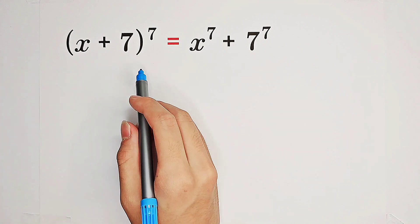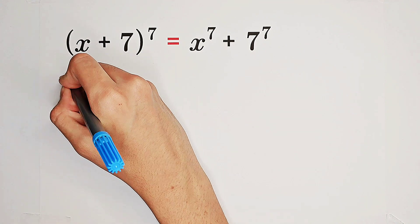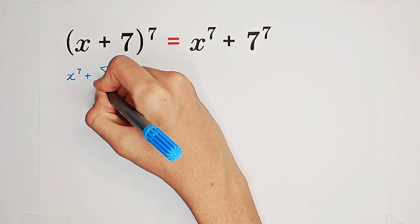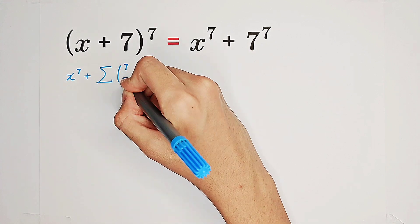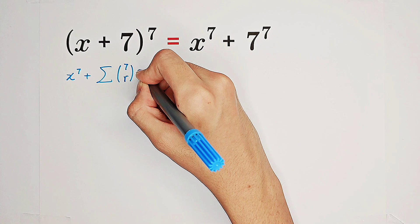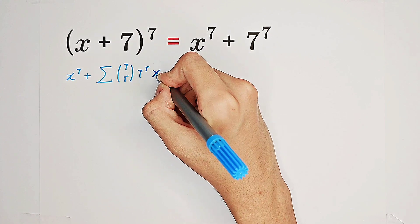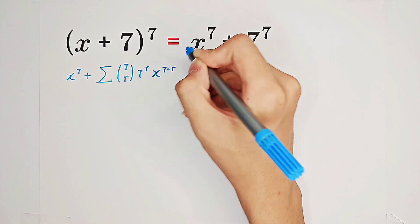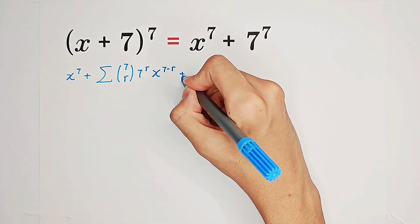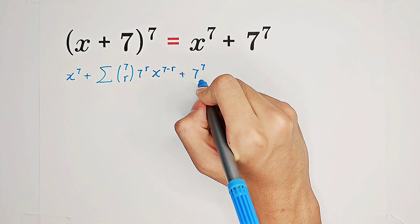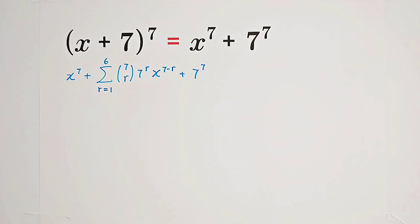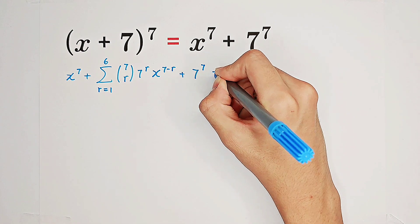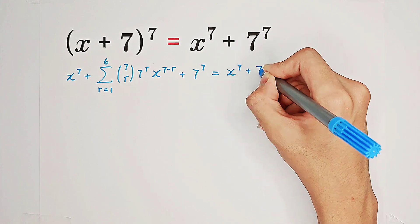By the binomial formula, we can write the left-hand side as x to the power of 7, plus the sum of 7 choose r times 7 to the power of r times x to the power of 7 minus r, where r runs from 1 to 6, and then plus 7 to the power of 7. Notice that this sum from r equals 1 to 6 is actually our left-hand side, and our right-hand side is a section of it.